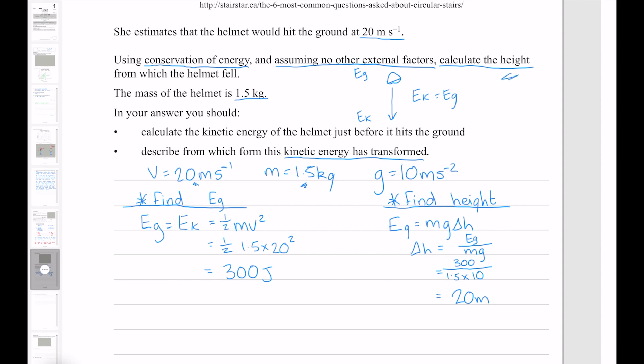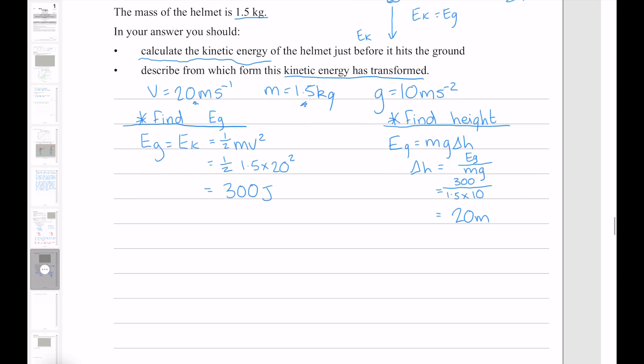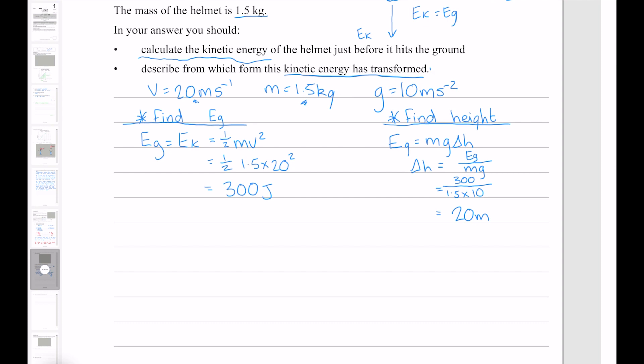So we've calculated our height, as the question wants, and we've calculated the kinetic energy as it said we should. Now we also need to do this second point here, describe from which form this kinetic energy has transformed. The form in question is gravitational potential energy. The kinetic energy has transformed from gravitational potential energy.